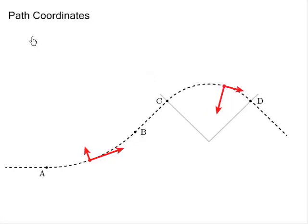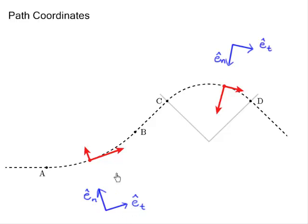This leads us naturally to the topic of path coordinates. What we want to do is express acceleration, velocity, and other quantities of interest in path coordinates. In path coordinates, we define basis vectors as follows: one basis vector in the direction tangent to the path and another basis vector in the direction perpendicular to the path.